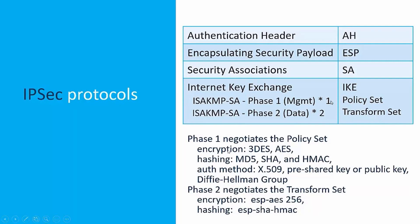There is a single policy set used for management in Phase 1, and there are two transform sets — one inbound and one outbound — used for data. In Phase 1, what's negotiated is the policy set: the encryption that's going to be used, let's say 3DES or AES; the hashing that's going to be used, either MD5 or SHA with HMAC, which is a keyed hash; the method of authenticating each end of the IPsec tunnel using X.509 certificates with either pre-shared keys or public key; and the Diffie-Hellman group that's going to be used to share those keys across the internet.